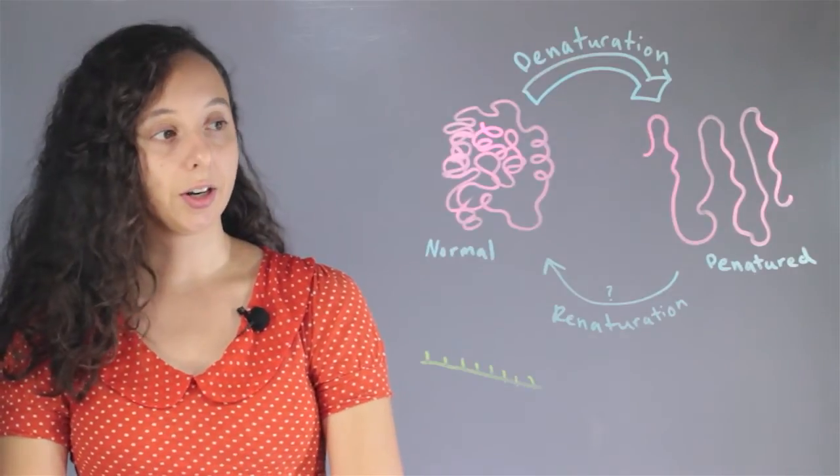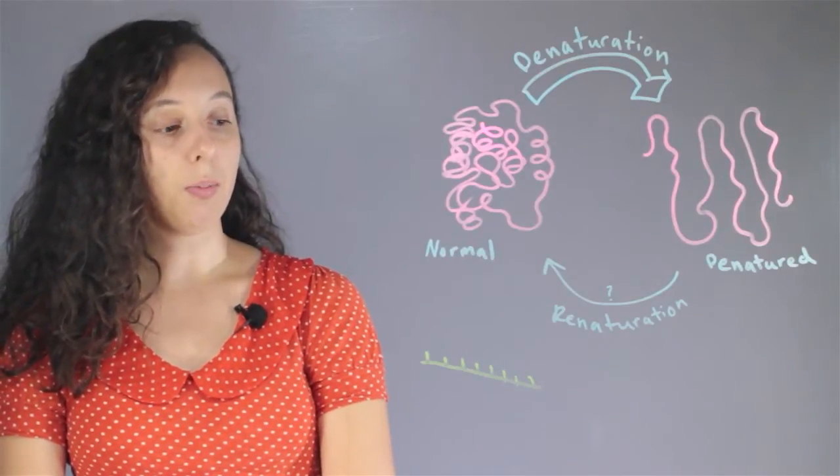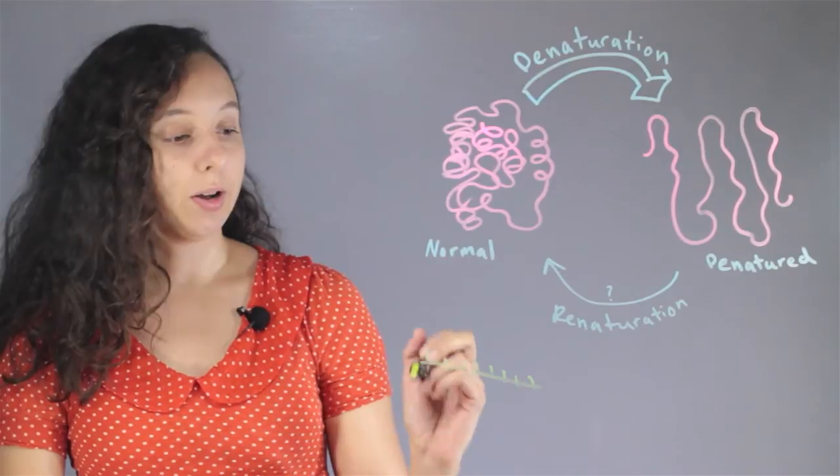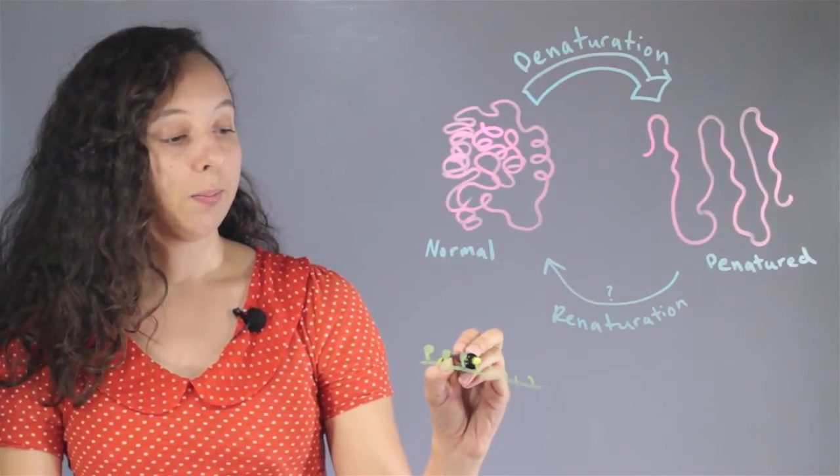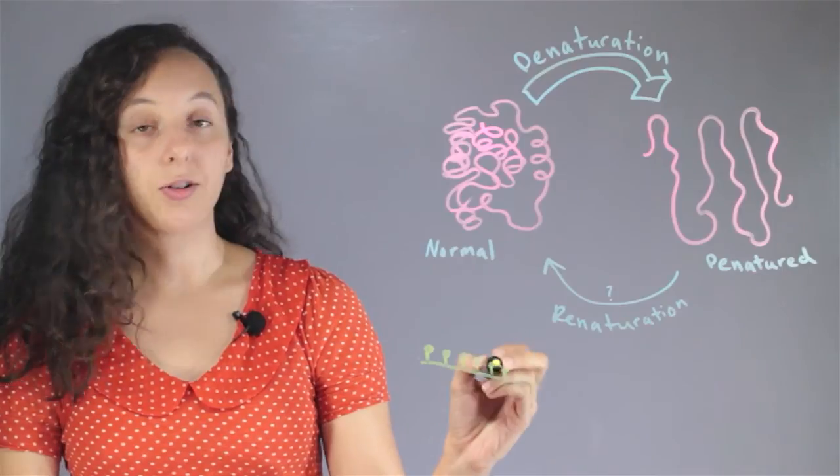And it links together through a bunch of bonds—not the bonds that are keeping the individual amino acids together, but different types of bonds like hydrogen bonds.